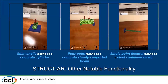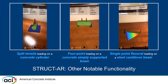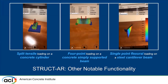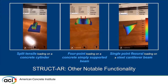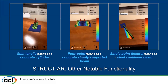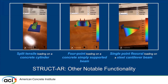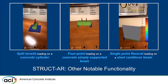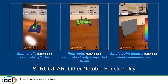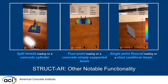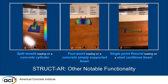Here are a few other examples demonstrated in our app. On the left, we have a split tensile loading on a concrete cylinder. In the middle, we have a simply supported beam under four-point loading. And on the right, we have a cantilever beam showing the moment and shear diagrams in three dimensions.